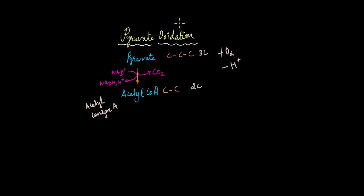Now because it is an oxidation process, a hydrogen is released and that hydrogen reacts with NAD+, producing NADH and H+. This is, as you can remember, the electron carrier.